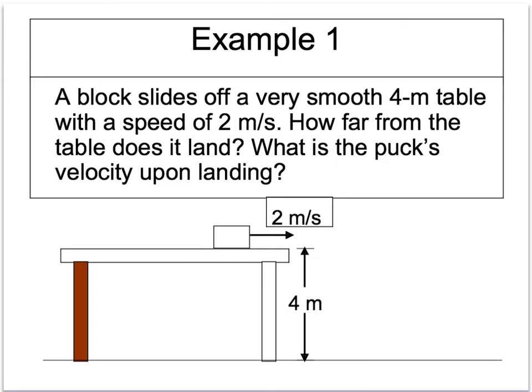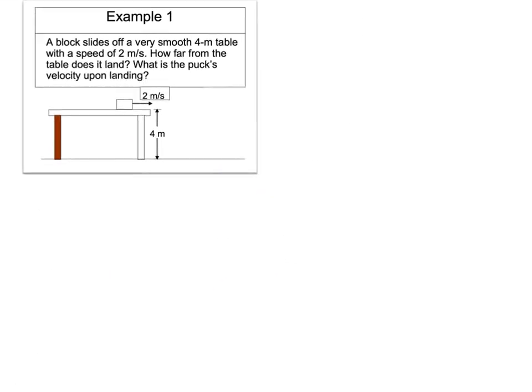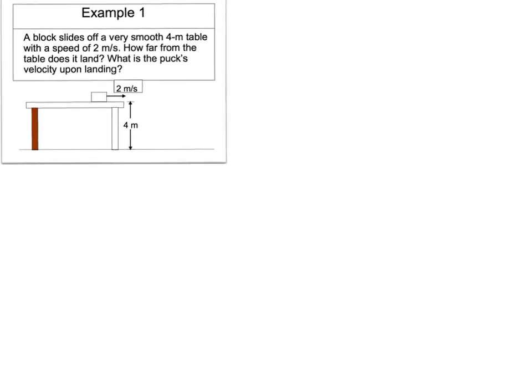Alright, so let's look at some examples. I'm going to work two of them. These examples cover just a little of the potential questions you could be asked. You could be asked any question at all about projectile motion, so be ready. A block slides off a very smooth 4 meter table with a speed of 2 meters per second. How far from the table does it land? What is the puck's velocity upon landing?